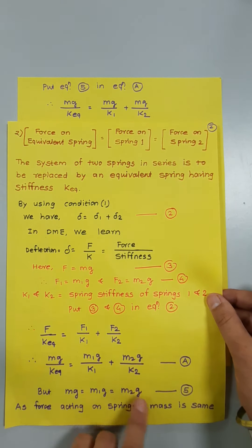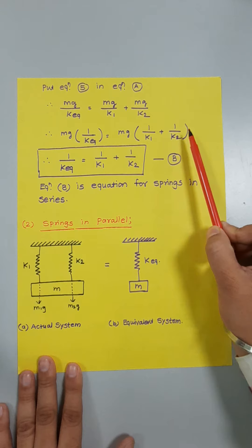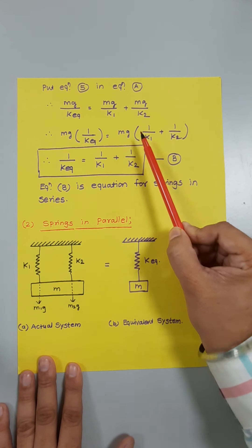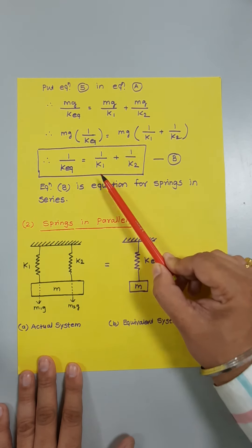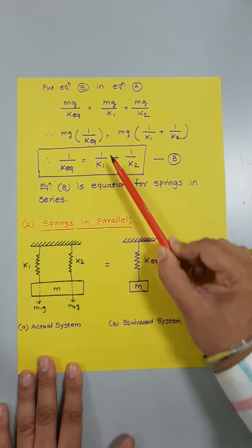Observing this equation, mg is common on both sides. Taking mg common: mg × (1/k_equivalent) = mg × (1/k1 + 1/k2). The mg terms cancel, giving the final formula for springs in series: 1/k_equivalent = 1/k1 + 1/k2. This is equation b, the formula used for springs in series.